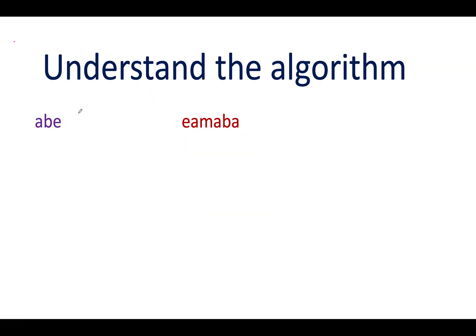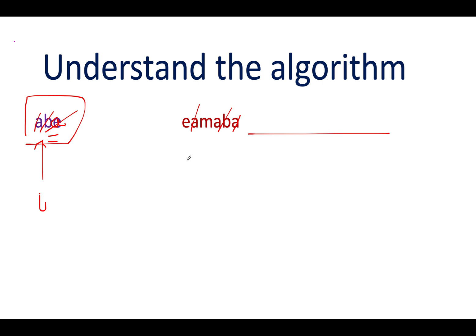For example, had it been 'aba', you would find the first character 'a' at one index, the second character 'b' at another, and the third character 'a' at another. There can be more characters in the input string. However, to confirm a subsequence, the iterator i must become equal to the length of the query string — meaning all characters were found in order. As soon as that condition is met, you know the string is a valid subsequence. We use this information to build our algorithm.